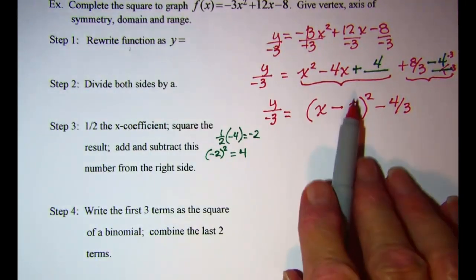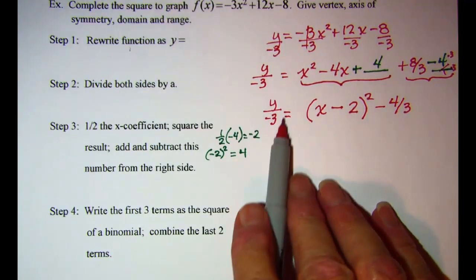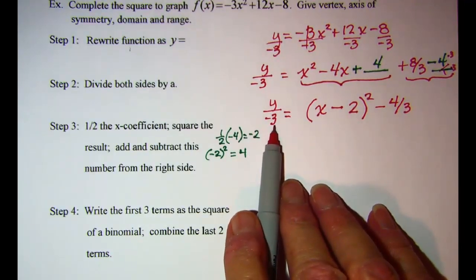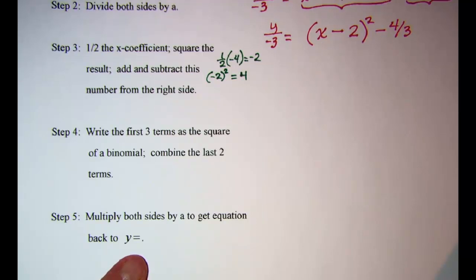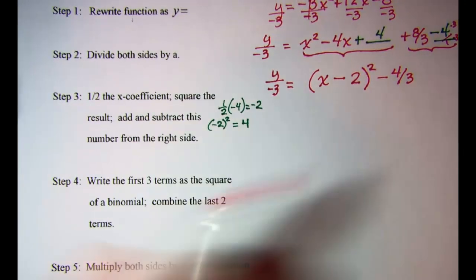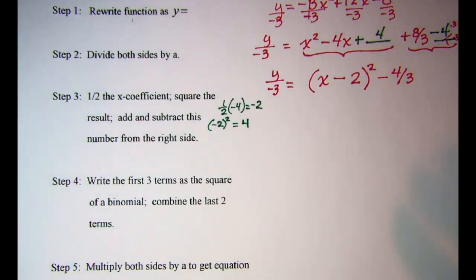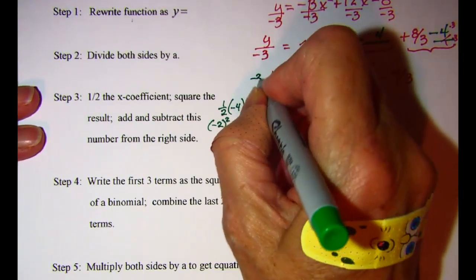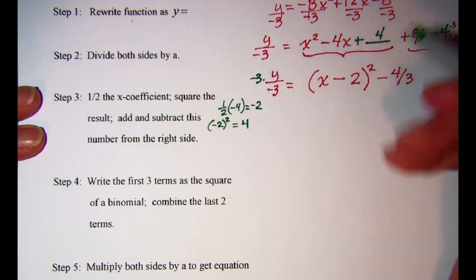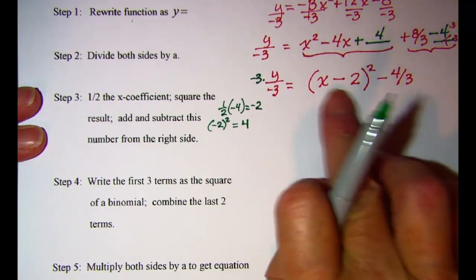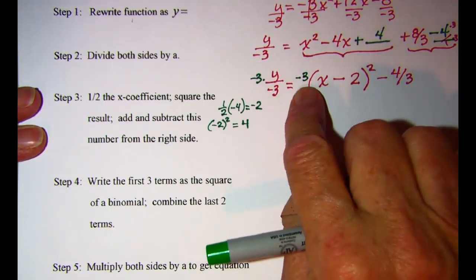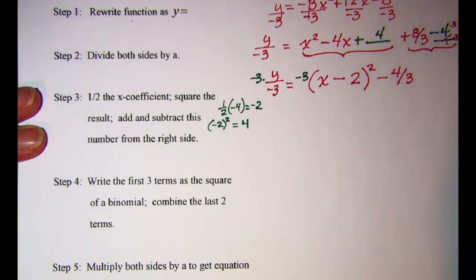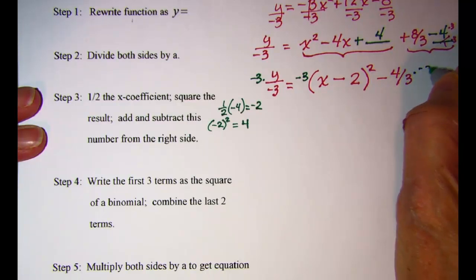I almost have my vertex form. I just need to get y by itself over here again. So step 5 will be to multiply both sides by a to get the equation back to y equals. If I multiply both sides by negative 3, now you're only going to multiply this term, so you're going to write it out in front. This is going to be my a value from my vertex form, and then multiply here by negative 3 as well.